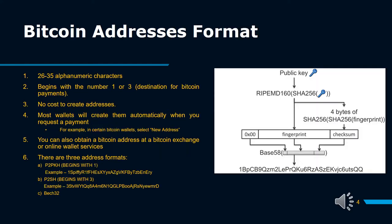Bitcoin Address Format: a Bitcoin address is an identifier — an account number — starting with 1 or 3 and containing 27 to 34 alphanumeric Latin characters, except 0, O, and I. Bitcoin addresses can also be represented as a QR code. The addresses are anonymous and do not contain information about the owner. A Bitcoin address can be obtained for free using, for example, Bitcoin software. Most wallets will create them automatically when you request a payment.